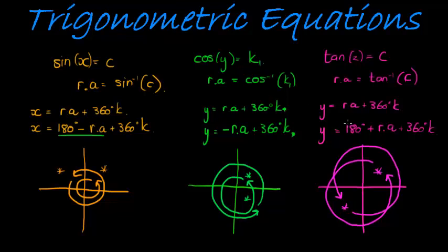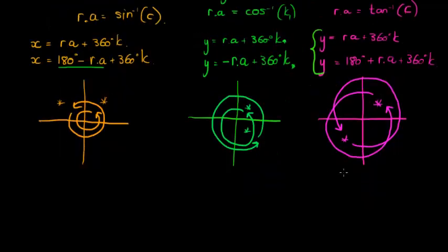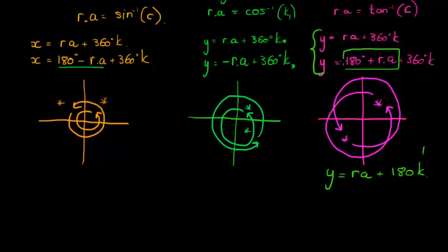I can summarize both of these in one statement: y equals the reference angle plus 180 times k. When k equals 1, I have 180 plus the reference angle. If k equals 2, I have the reference angle plus 360. All the solutions are summarized in this one formula.